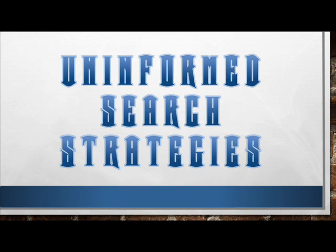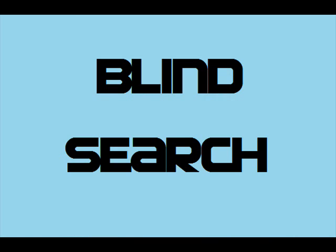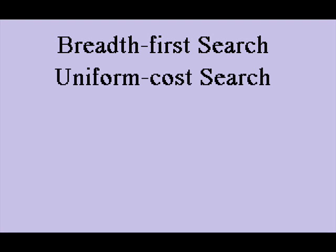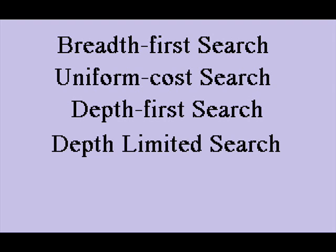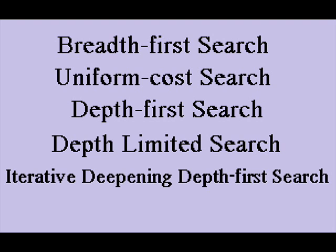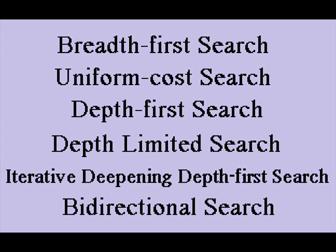Uninformed search strategies, also called blind search, generate successors and distinguish a goal state from a non-goal state. These kinds of strategies consist of breadth-first search, uniform cost search, depth-first search, depth-limited search, iterative-deepening depth-first search, and bidirectional search.